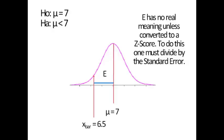E has no real meaning unless converted to a Z score. To do this, one must divide by the standard error or SE. Recall that the standard error is the standard deviation for the particular problem of interest. If this problem is an X bar distribution, then when we took that sample and found 6.5, we have an S and we have an N. Let's suppose that our S was 2 and that our N was 50, that we sampled 50 different data points.